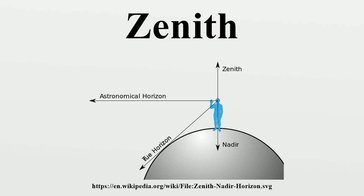Zenith telescopes are used for precision measurement of star positions, to simplify telescope construction, or both. The NASA Orbital Debris Observatory and the Large Zenith Telescope are both zenith telescopes, since the use of liquid mirrors meant these telescopes could only point straight up.